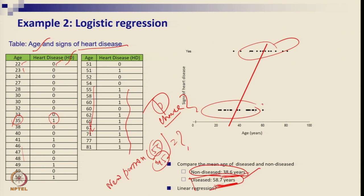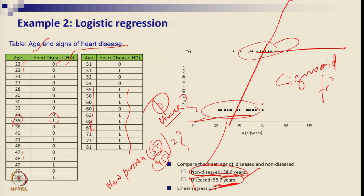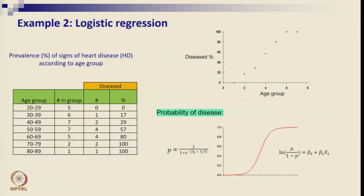This data is classified into disease and no-disease cases, and you cannot fit a straight regression line because there is a ceiling. So we apply the sigmoid function: p = 1 / (1 + e^(−(β₀ + β₁h))). We fit the logistic model using this formula and plot it accordingly.